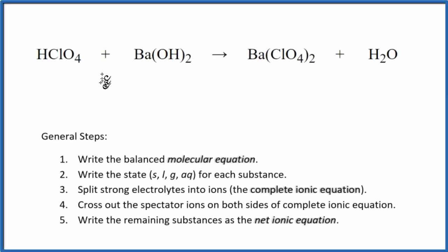In this video, we'll write the balanced net ionic equation for HClO4 plus Ba(OH)2. This is perchloric acid, and this is barium hydroxide.